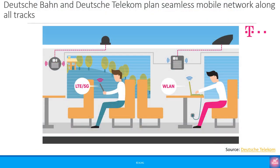Deutsche Bahn, the German railway company, and the German operator Deutsche Telekom recently announced plans for a seamless mobile network along all their tracks. The companies have agreed that Deutsche Telekom is to build out its mobile communications network along Deutsche Bahn's railway lines, close any gaps, and significantly increase network performance — all to be completed by 2026 at the latest. While the press release didn't provide a lot of technical details, the graphics shared provide an understanding of their vision. As you can see, they expect users to be able to use Wi-Fi, 4G and 5G anywhere in the train.